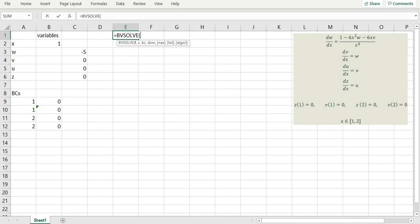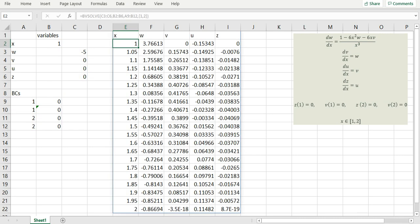My first argument is my equations. My second argument is my variables. My third argument is my BC matrix. And my fourth argument is my domain, which goes from 1 to 2. I happen to be working with ExcelLab 365, so I can take advantage of the spill feature and simply press Enter.